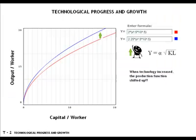When the state of technology changes, the production function shifts up as seen here. Many think that the technological change has to be a whiz-bang, awe-inspiring innovation like the Internet. But many changes simply involve finding a faster way to do the same task with less.